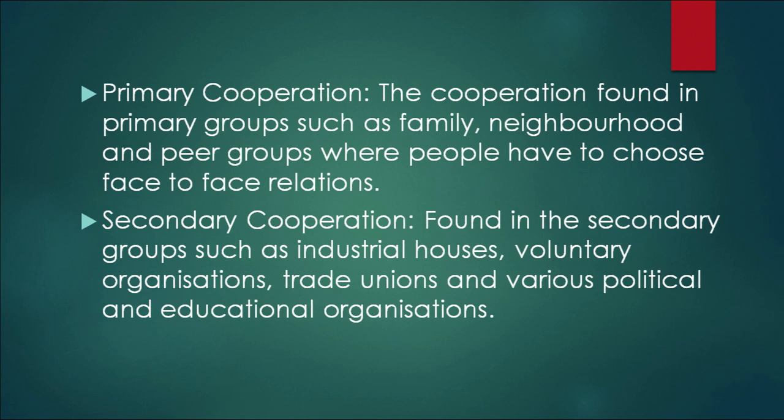In secondary cooperation, cooperation is voluntary. It is found in secondary groups such as industrial houses, voluntary organizations, trade unions, and various political and educational organizations. For example, in a school performing some activities, the relationship is not face-to-face. Tertiary cooperation is found when individuals or groups who otherwise compete with one another come together and cooperate for a specific purpose — for example, cooperation between different political parties for a short span of time.